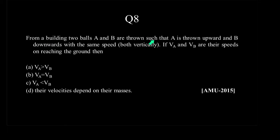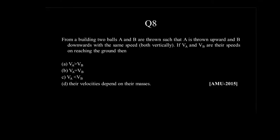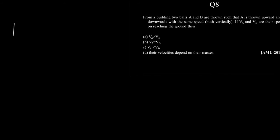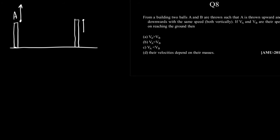From a building, two balls A and B are thrown such that A is thrown upward and B downward with the same speed, both vertically. If v_a and v_b are their speeds on reaching the ground. Let me take two cases — A is thrown upwards and B is thrown downwards.